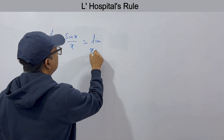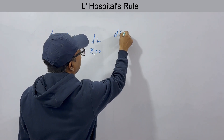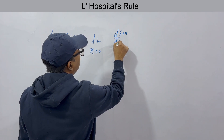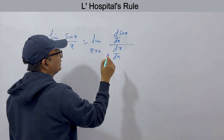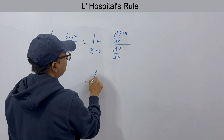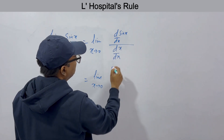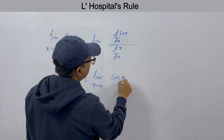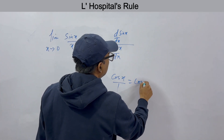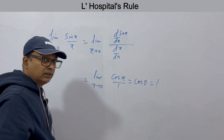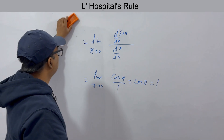We will take the derivative: limit x→0 of d(sin x)/dx divided by d(x)/dx. So we get limit x→0 of cos(x) by 1. Now put x = 0: cos(0) = 1. So the limit equals 1. This is a very good example to start with.